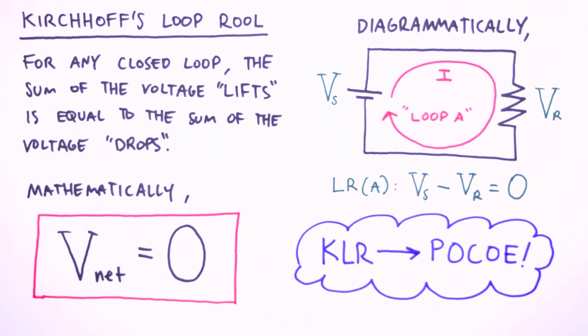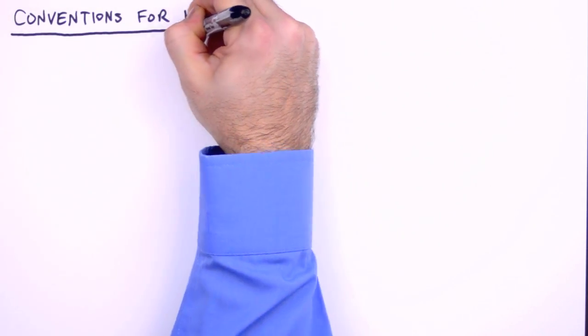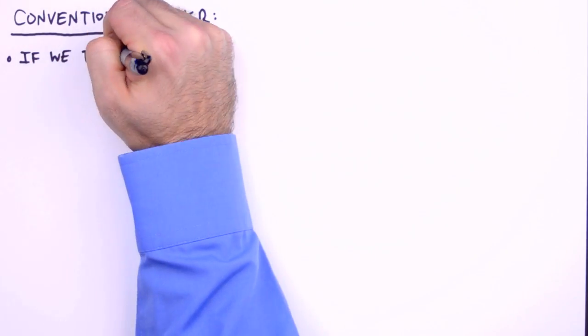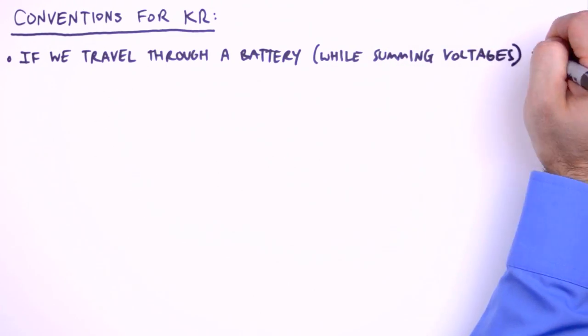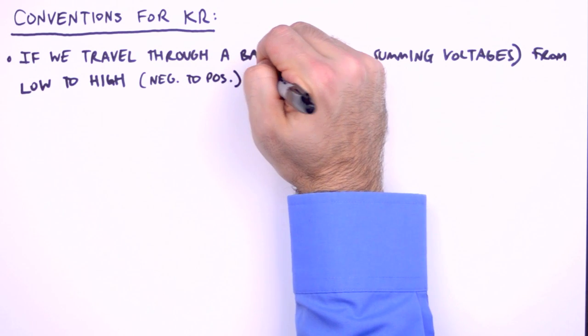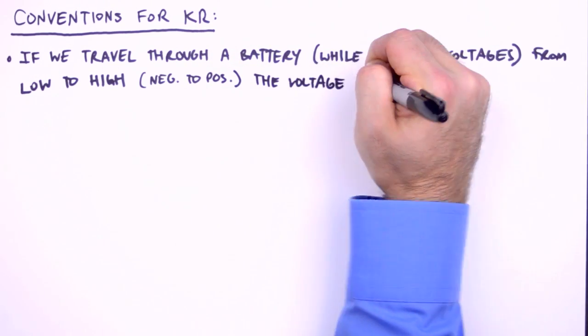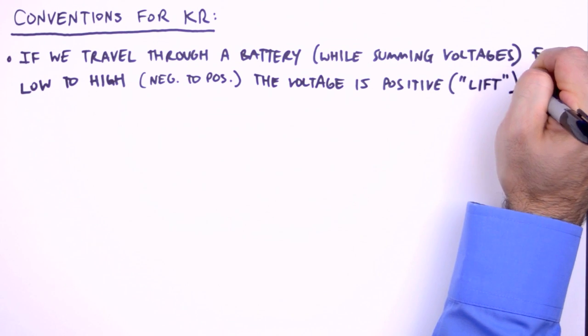Now let's discuss the conventions associated with Kirchhoff's rules. The first two conventions relate to the loop rule in identifying voltage lifts and drops. If we're moving around a loop and we travel through a battery while summing voltages, and we go from low to high—which is to say going from the negative terminal to the positive terminal—then the voltage of the battery is treated as a positive voltage, which we'll call a voltage lift because of the increase in electrical potential.